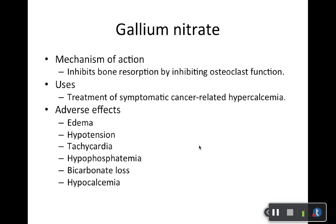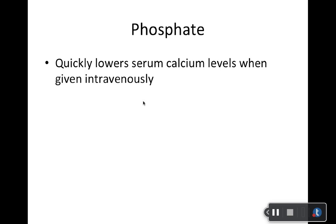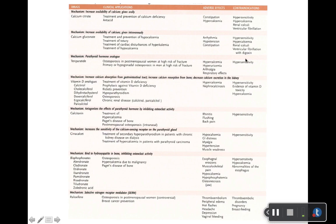Gallium nitrate — you'll really only see this with cancer patients for symptomatic cancer-related hypercalcemia. Not very commonly used, and it has a lot of issues with adverse effects, but benefit versus risk analysis means it can still be used. Specialists typically use this and it's not super popular. Phosphate — just real quick — in an inpatient setting if you want to quickly lower serum calcium, IV phosphate may be a strategy used. There's a great summary table here — please look at it, covering applications, adverse effects, and contraindications.